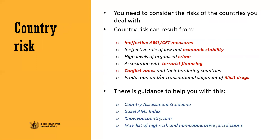You also need to consider the risks of the countries you deal with. Country risk can result from ineffective AML safety measures, ineffective rule of law and economic stability, high levels of organised crime, association with terrorist financing, conflict zones in bordering countries, and the production or transnational shipment of illicit drugs. There is guidance to help you objectively determine this, such as the Country Risk Assessment Guideline, which is a supervisor-produced guideline aimed to help you assess country risks. There is the Basel AML Index, which is an annual ranking assessing country risk regarding money laundering terrorism financing, focusing on AML safety frameworks and other related factors such as financial and public transparency and judicial strength. KnowYourCountry.com is an online resource which has country reports giving information on whether a country is on a sanctions list, whether they are on the FATF AML deficient list, and other factors which may increase the risk of their country.